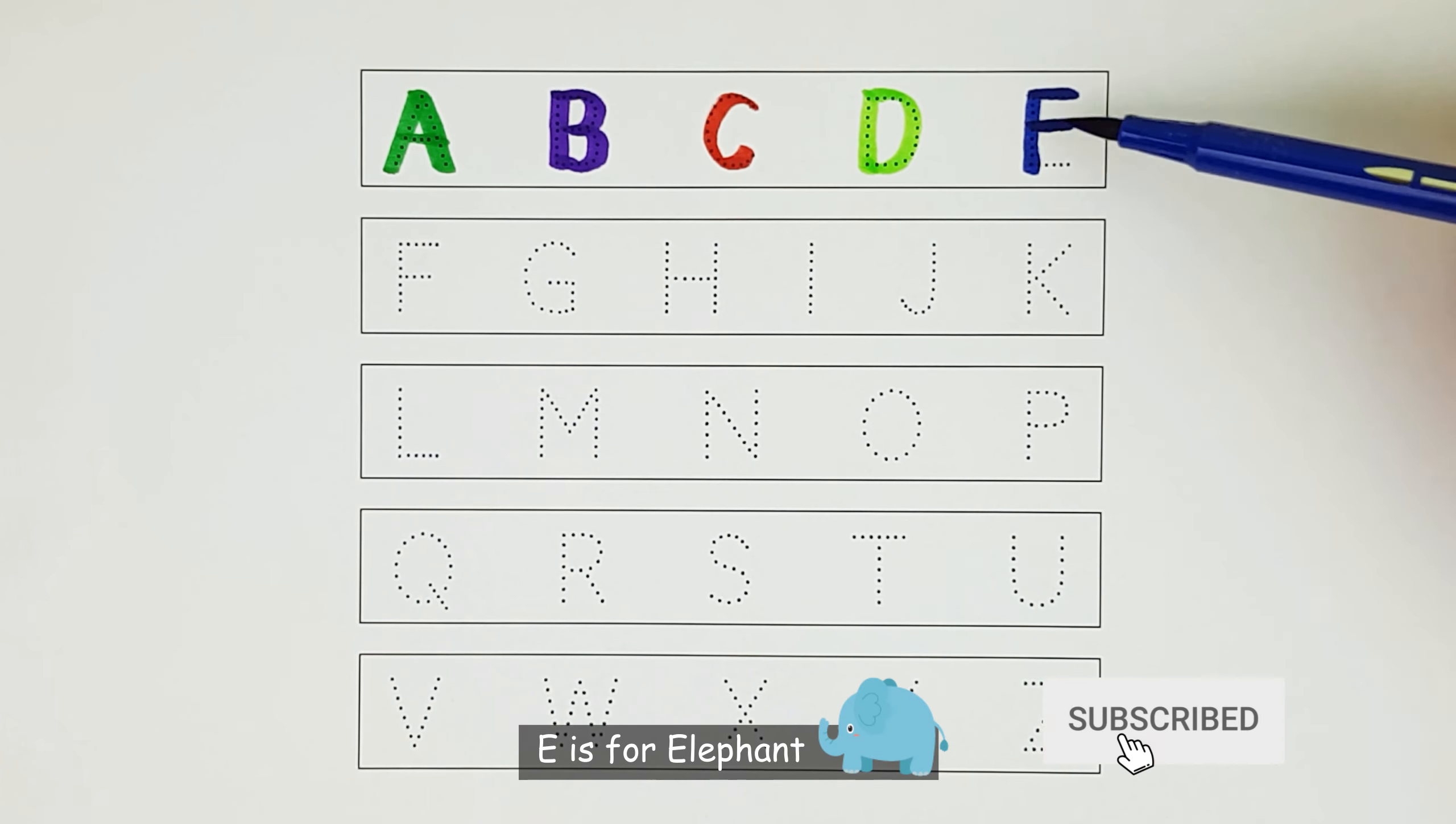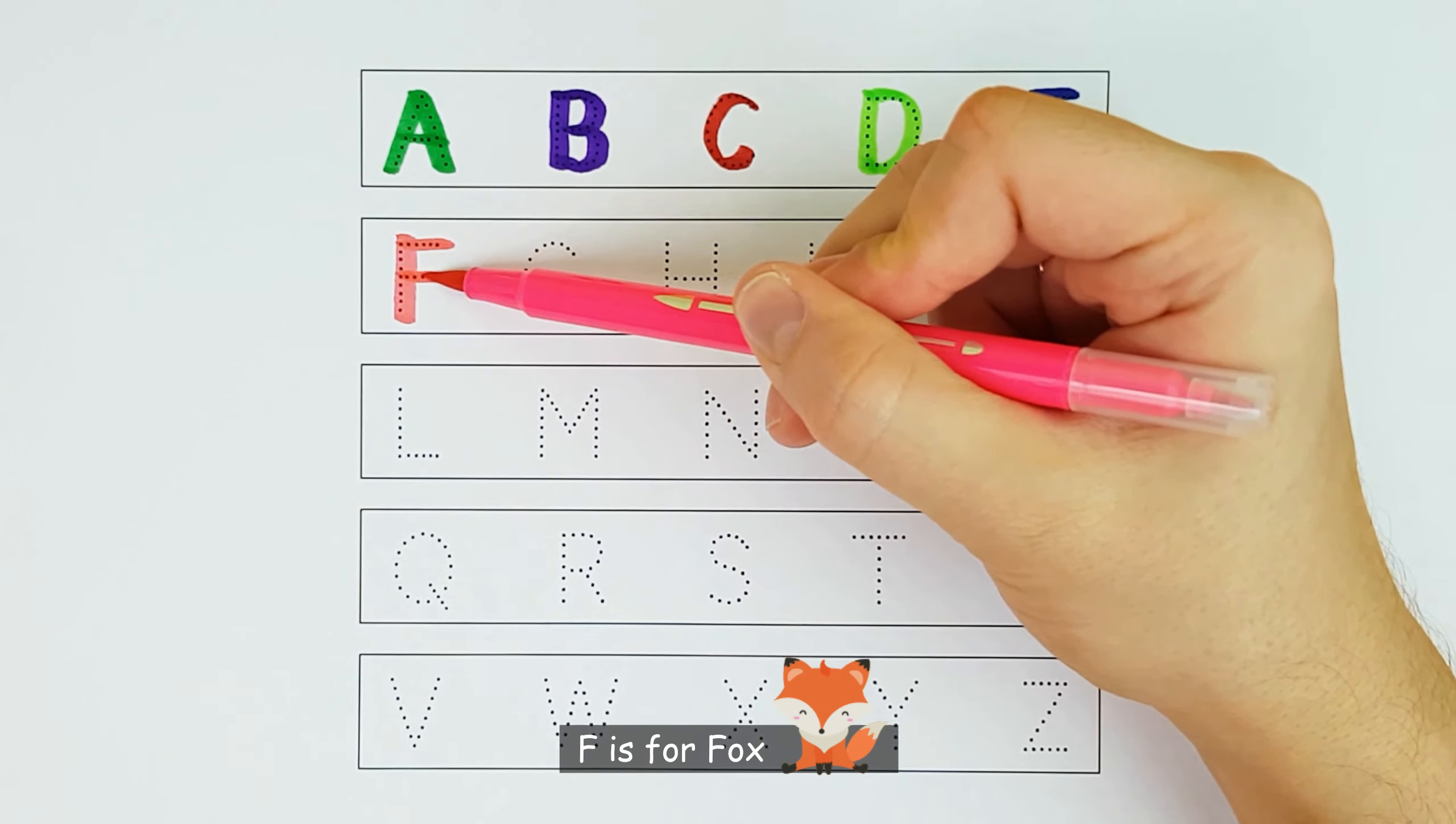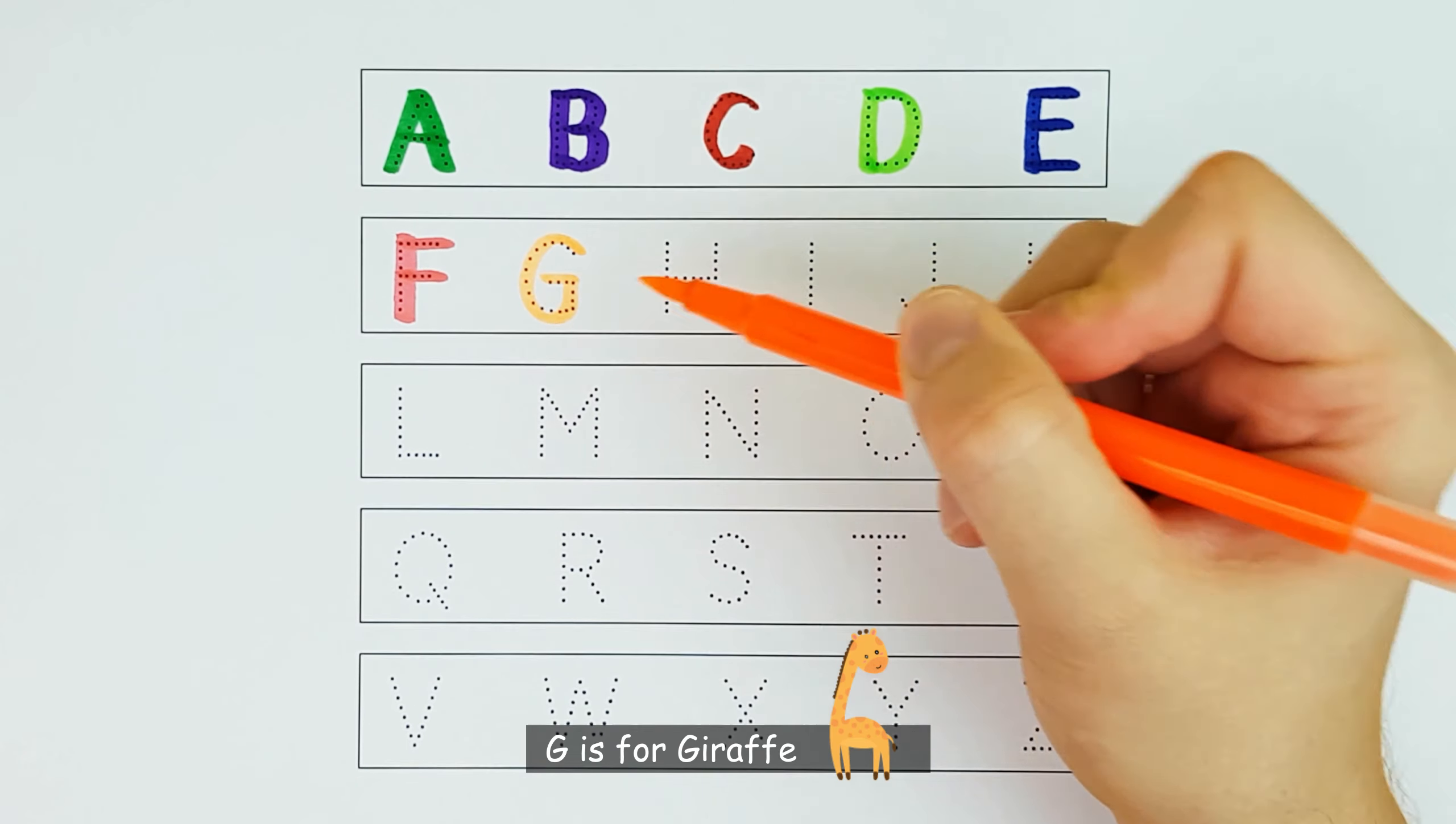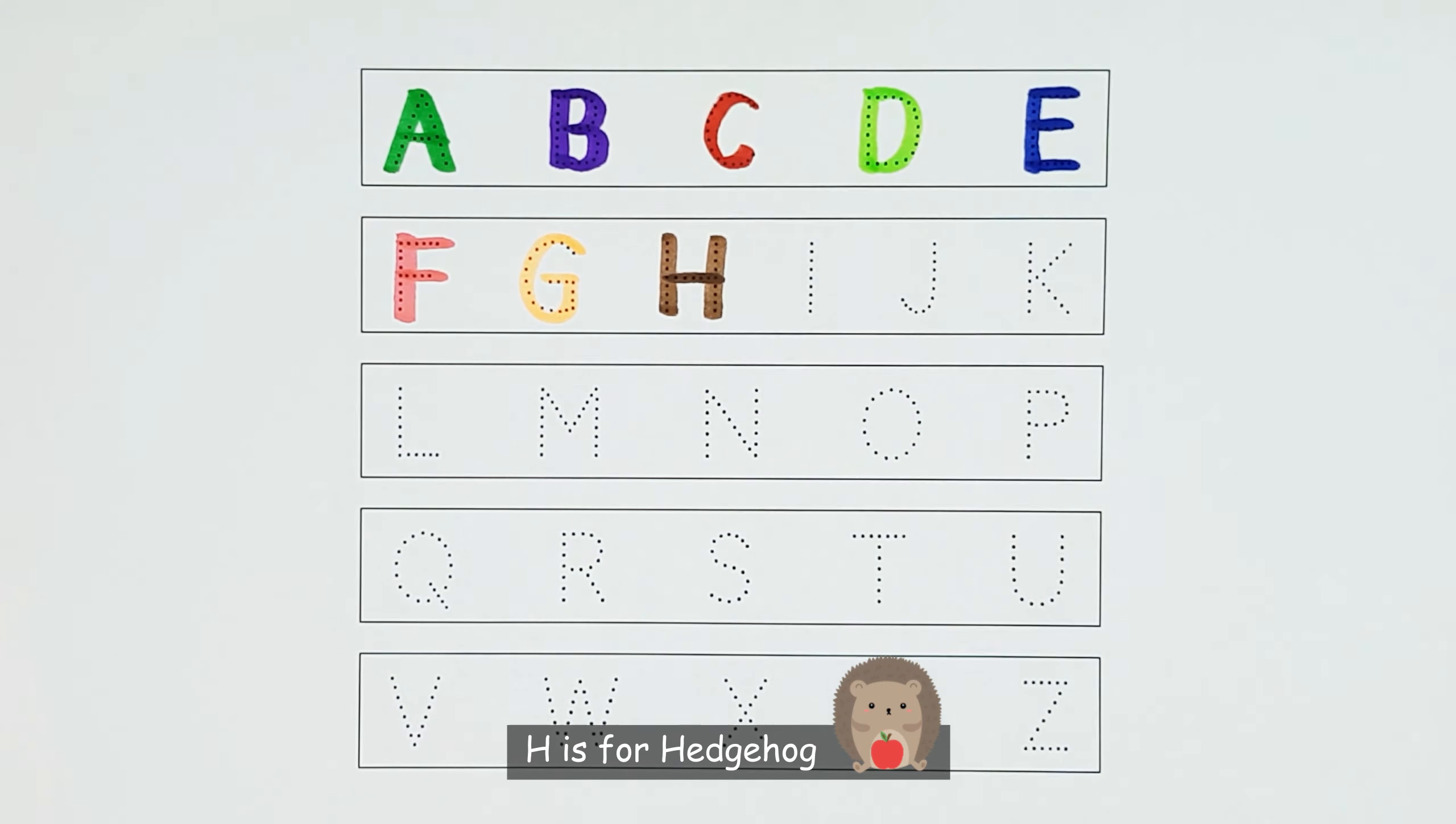E is for elephant. F is for fox. G is for giraffe. H is for hedgehog.